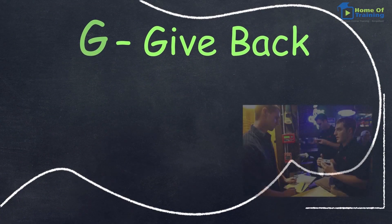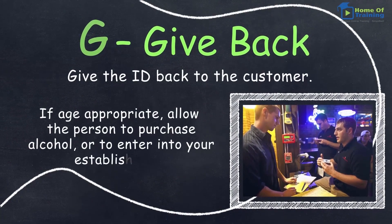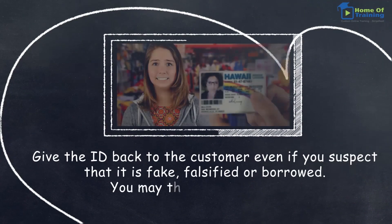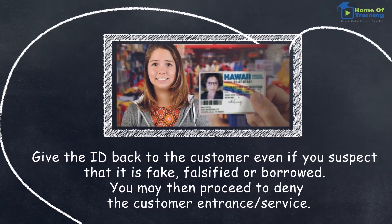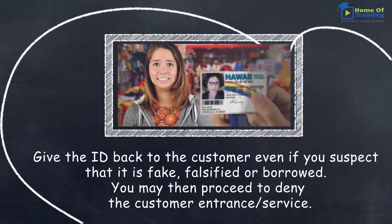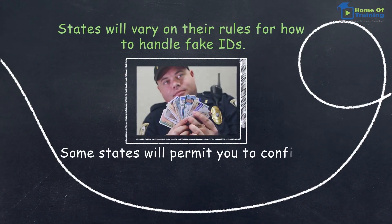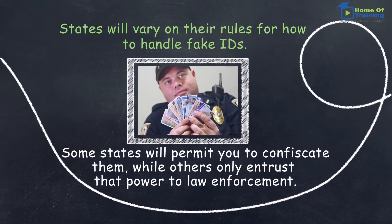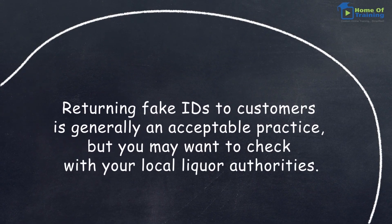G — Give back. Give the ID back to the customer. If age appropriate, allow the person to purchase alcohol or to enter your establishment. Give the ID back to the customer even if you suspect that it is fake, falsified, or borrowed — you may then proceed to deny the customer entrance or service. States will vary on their rules for how to handle fake IDs. Some states will permit you to confiscate them, while others only entrust that power to law enforcement. Returning fake IDs to customers is generally an acceptable practice, but you may want to check with your local liquor authorities.